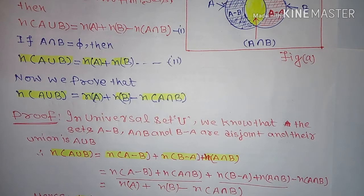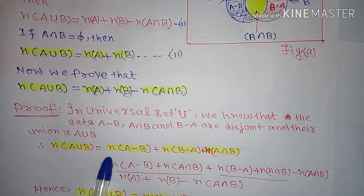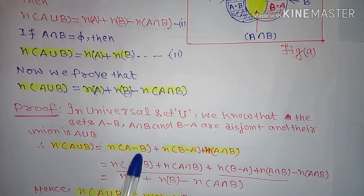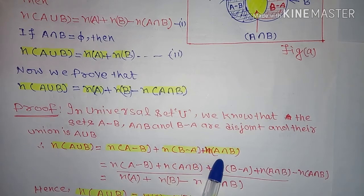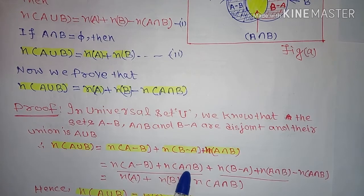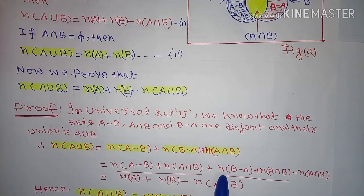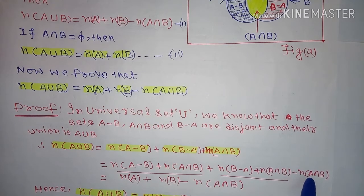Hence, the number of elements in A union B is equal to number of elements in A minus B plus number of elements in B minus A plus number of elements in A intersection B. Rearranging: this equals number of elements in A minus B plus number of elements in A intersection B plus number of elements in B minus A, and we add and subtract number of elements in A intersection B.